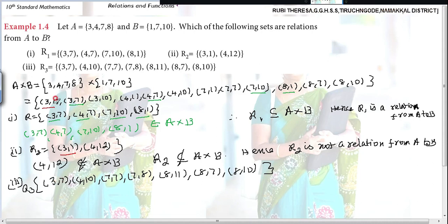Just you compare. What are the elements? 3,7. It is there. 4,10. 7,7. 7,8. Is it there in set B? No.